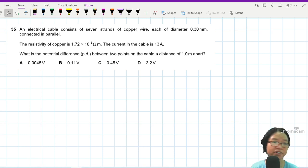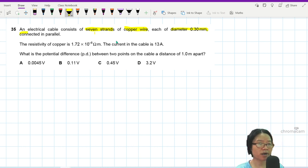Question 35: An electric cable consists of seven strands of copper wire, sounds like the beginning of a Christmas carol. Anyway, seven strands of copper wire, each of diameter this much, connected in parallel.